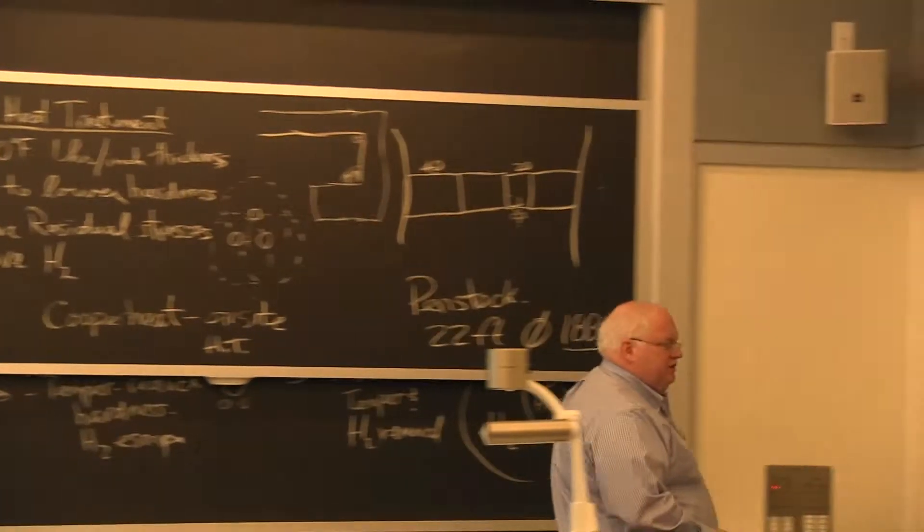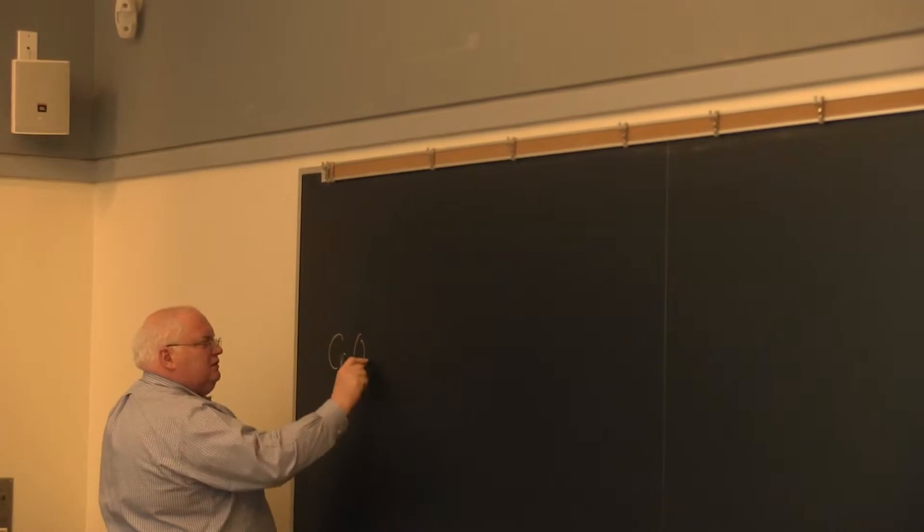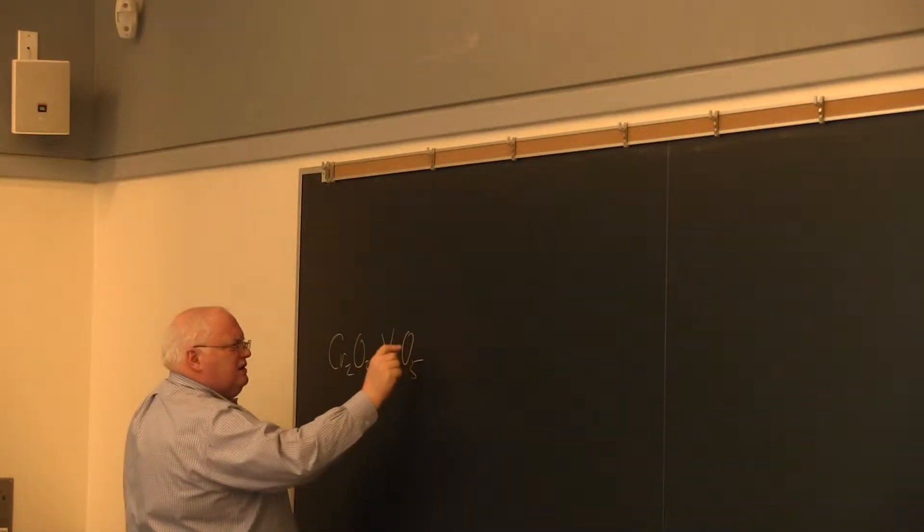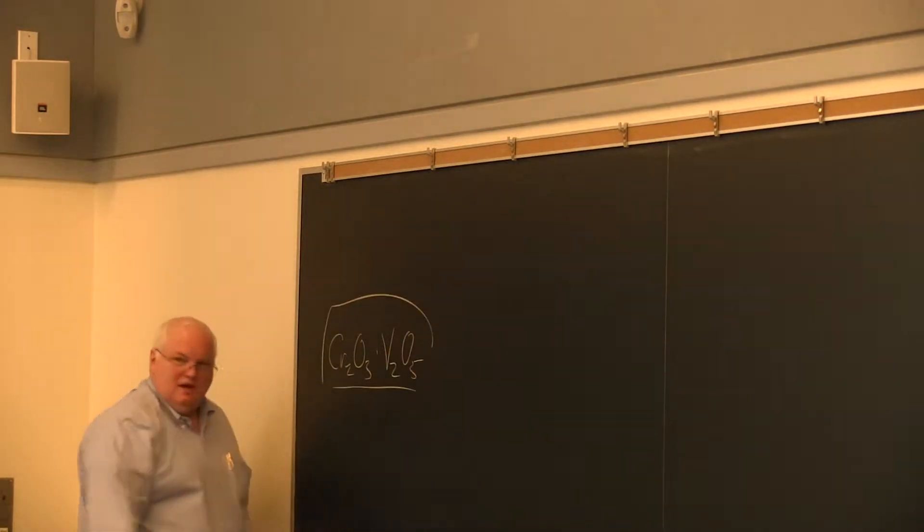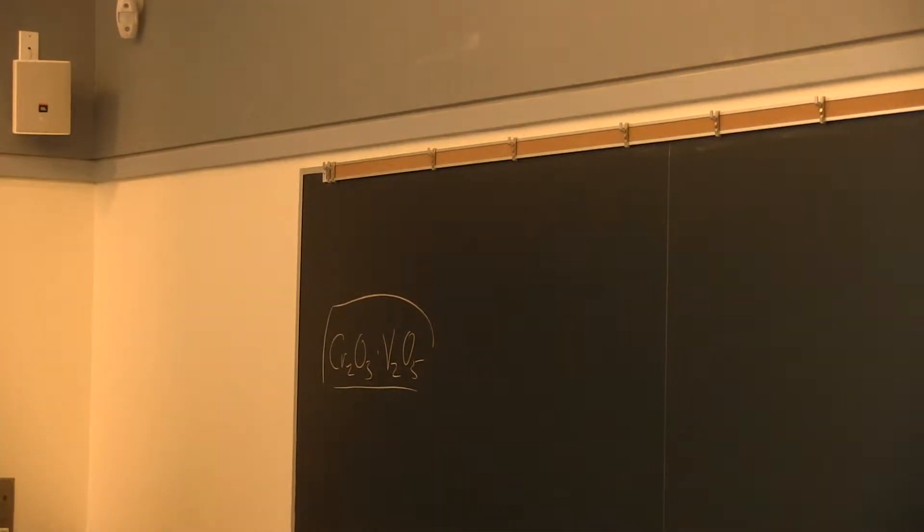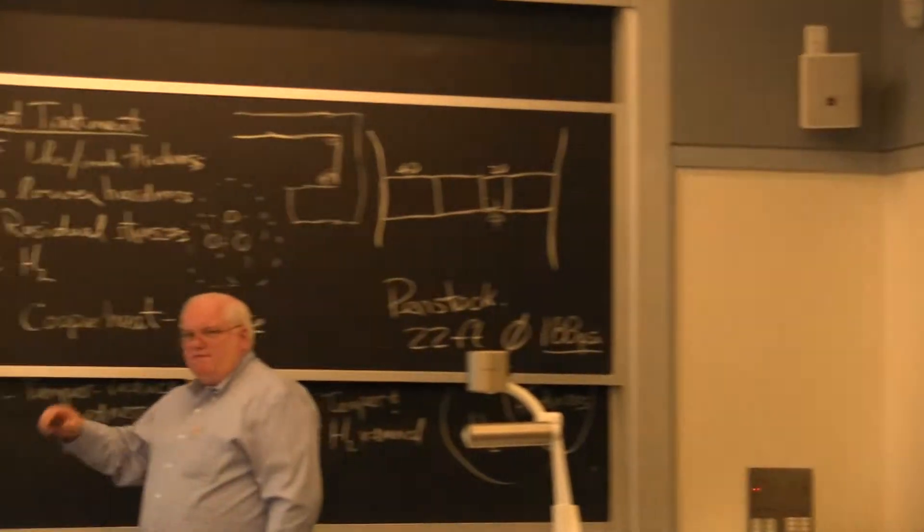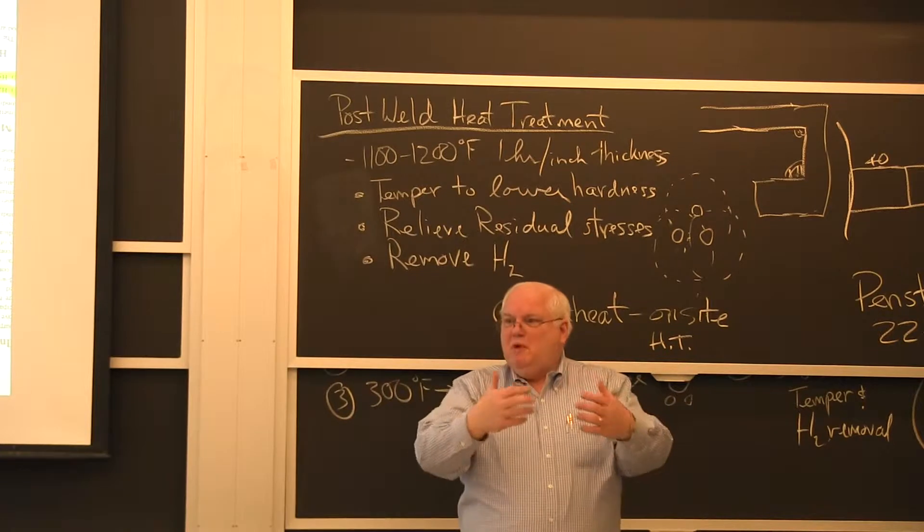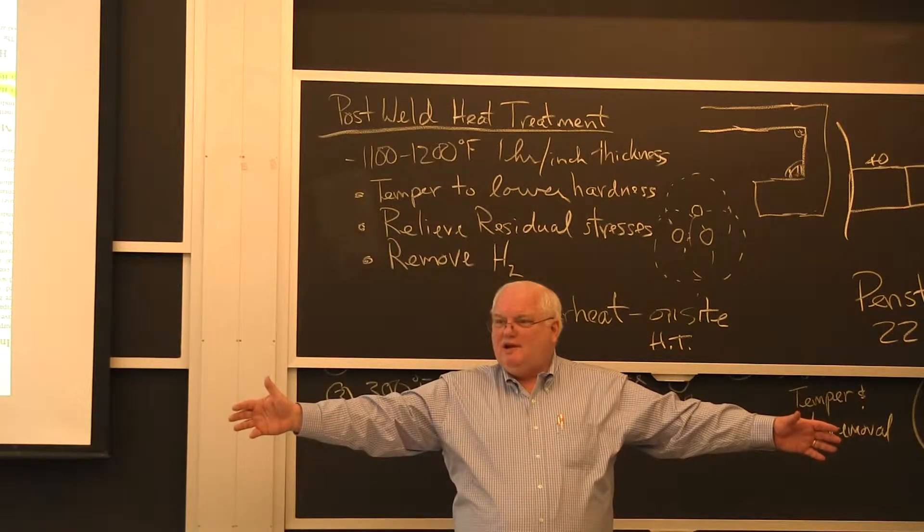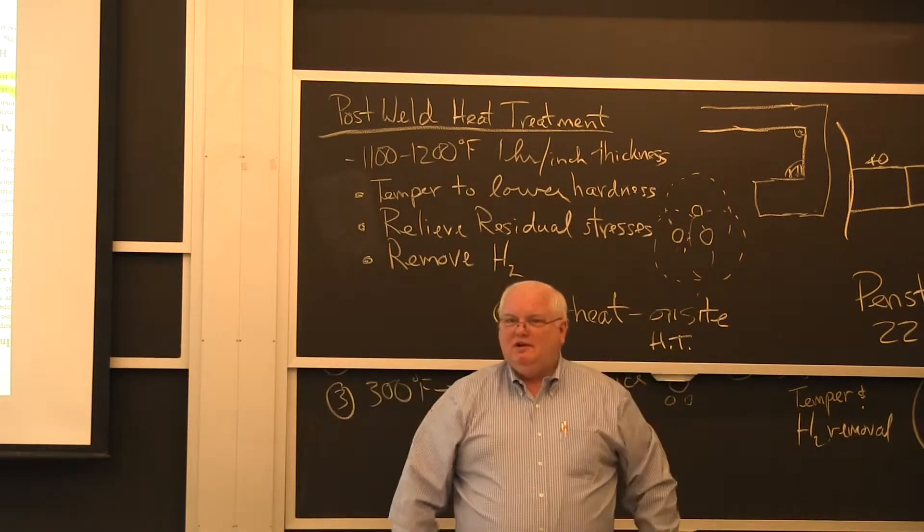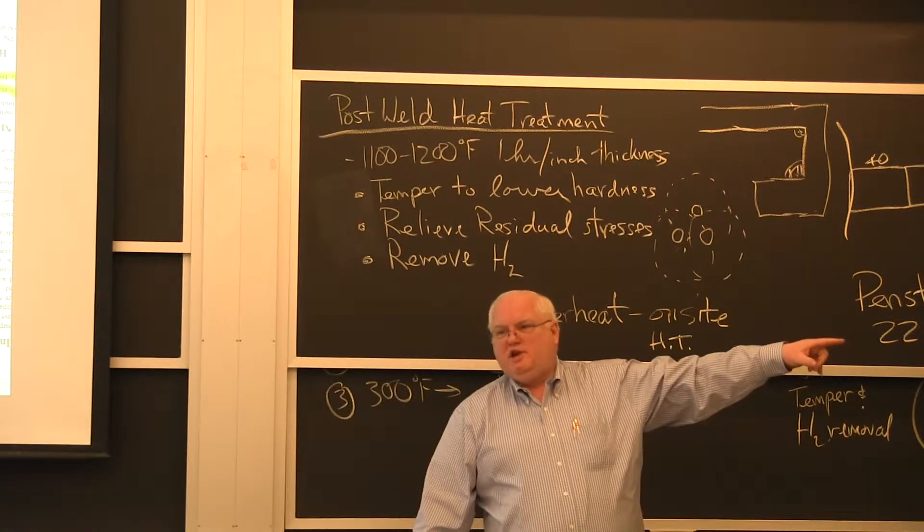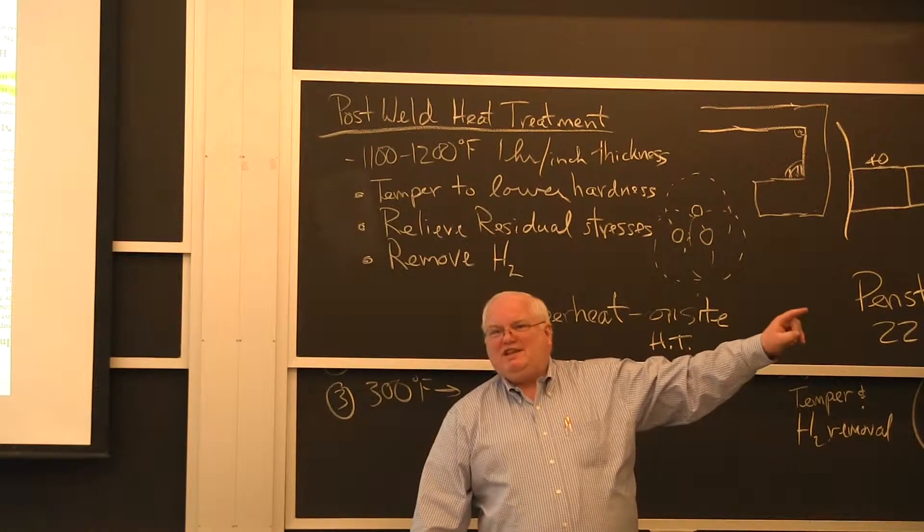...had been studying corrosion and oxidation of steels and stuff, and it turns out chromium oxide mixes with vanadium to form a low melting eutectic. So the protective chromium oxide scale on their stainless steel, when they fired their boilers with this oil containing vanadium, just melted away the chromium oxide protective scale for high temperatures. And the whole thing just destroyed overnight.